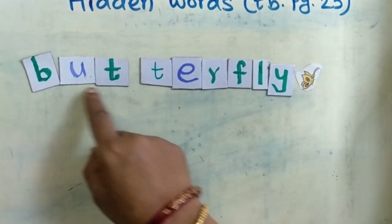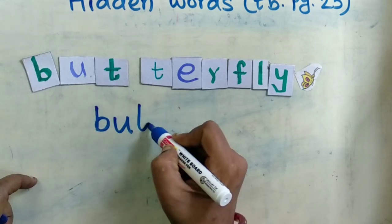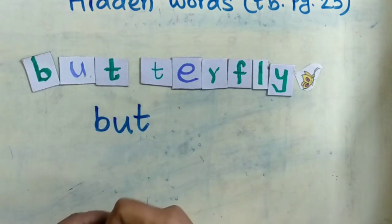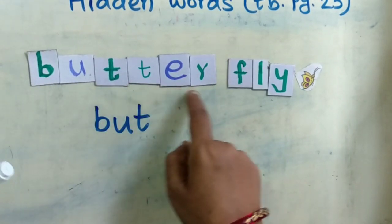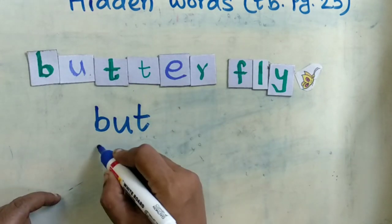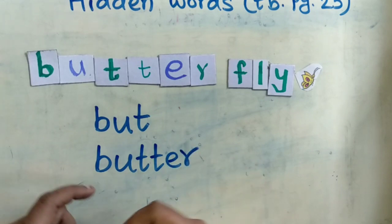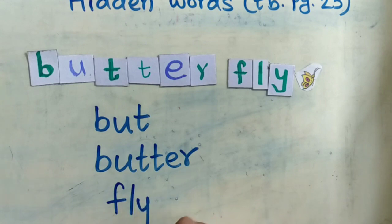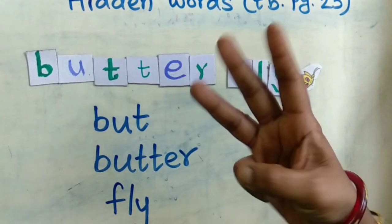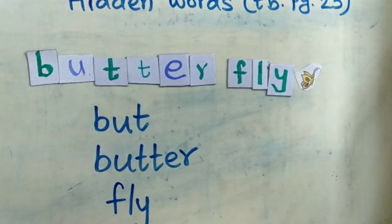I got one word here: B-U-T, but. And if I split the word here, B-U-T-T-E-R, butter. Butter is one more word, and then F-L-Y, fly. So in butterfly we got three hidden words: B-U-T, but; B-U-T-T-E-R, butter; F-L-Y, fly.